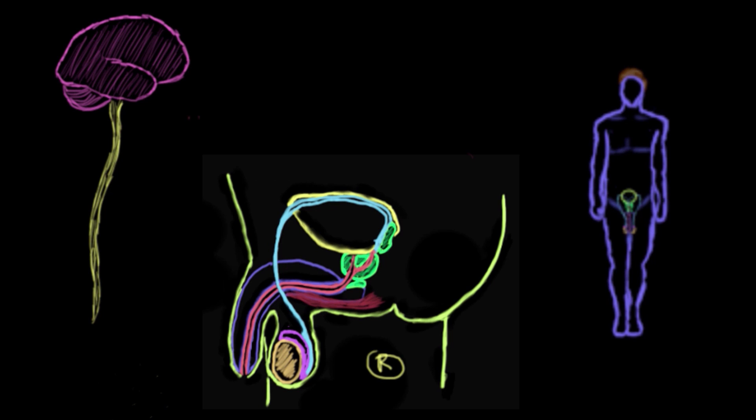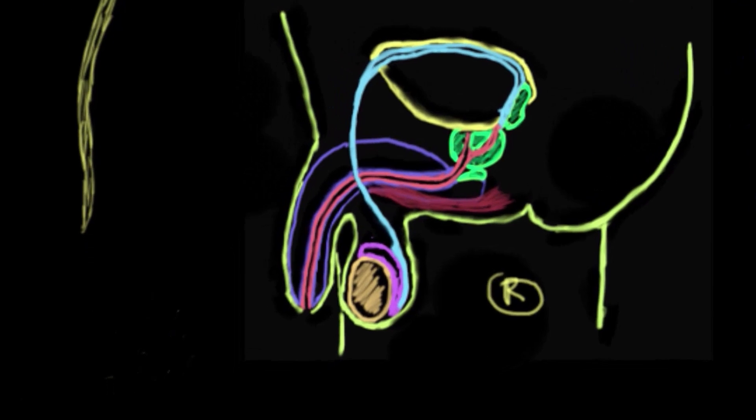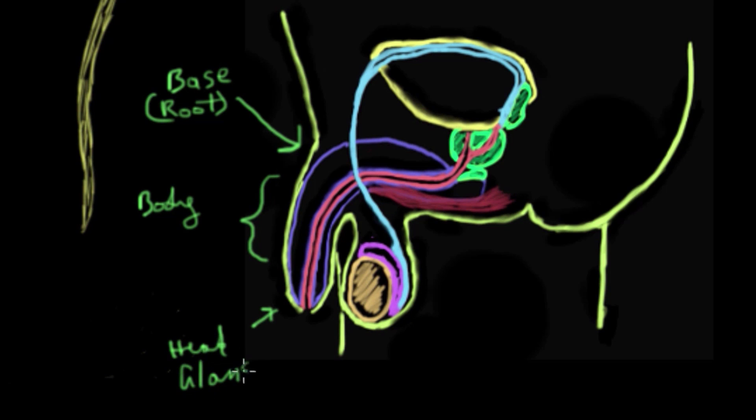But first we'll talk about some regional anatomy of the penis. So the base of the penis here, that's called the base or the root. This area here is known as the body.